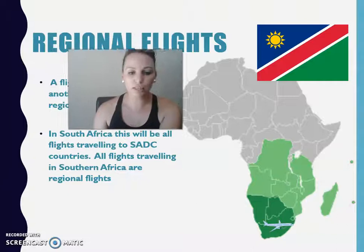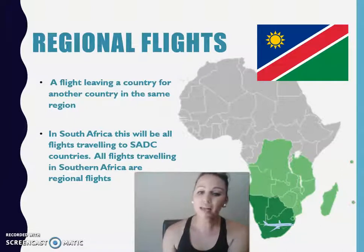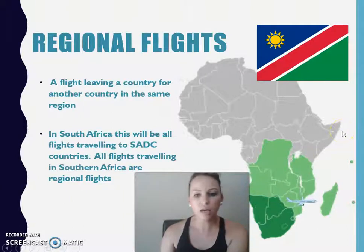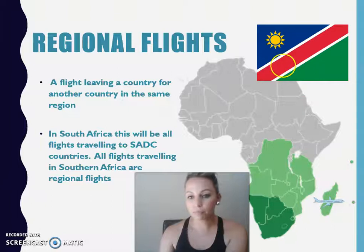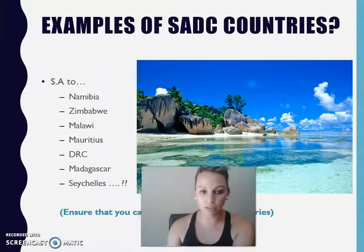Then we have regional flights. In grade 10 you already discussed our SADC countries, so a regional flight is a flight between any of these 16 countries. As you can see on the map, they are the green shaded areas. Please remember that the Comoros Islands is now on this list as well, making it 16 countries in total, not 15.